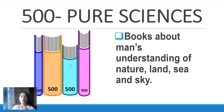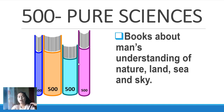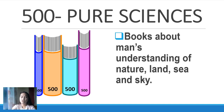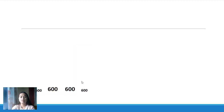For 500, it is studying your environment. You can find the great inventions of our scientists here. If your teacher asks you to research about types of land or other natural science topics, you go to the 500 section — Pure Sciences.